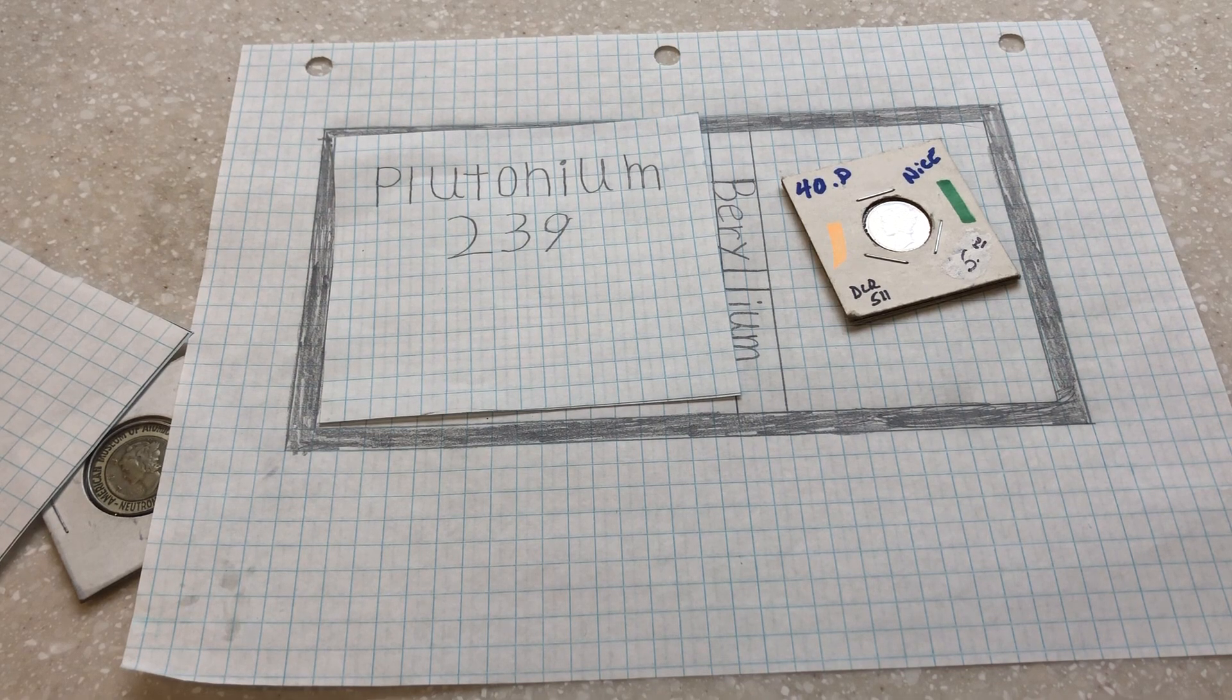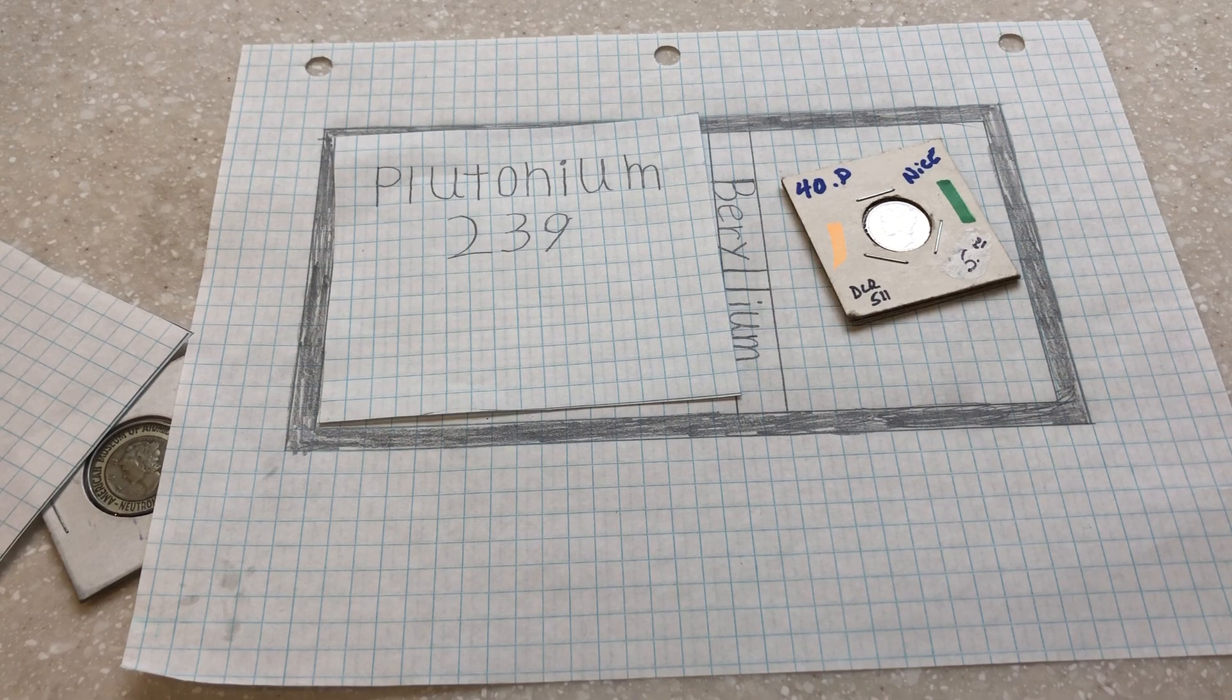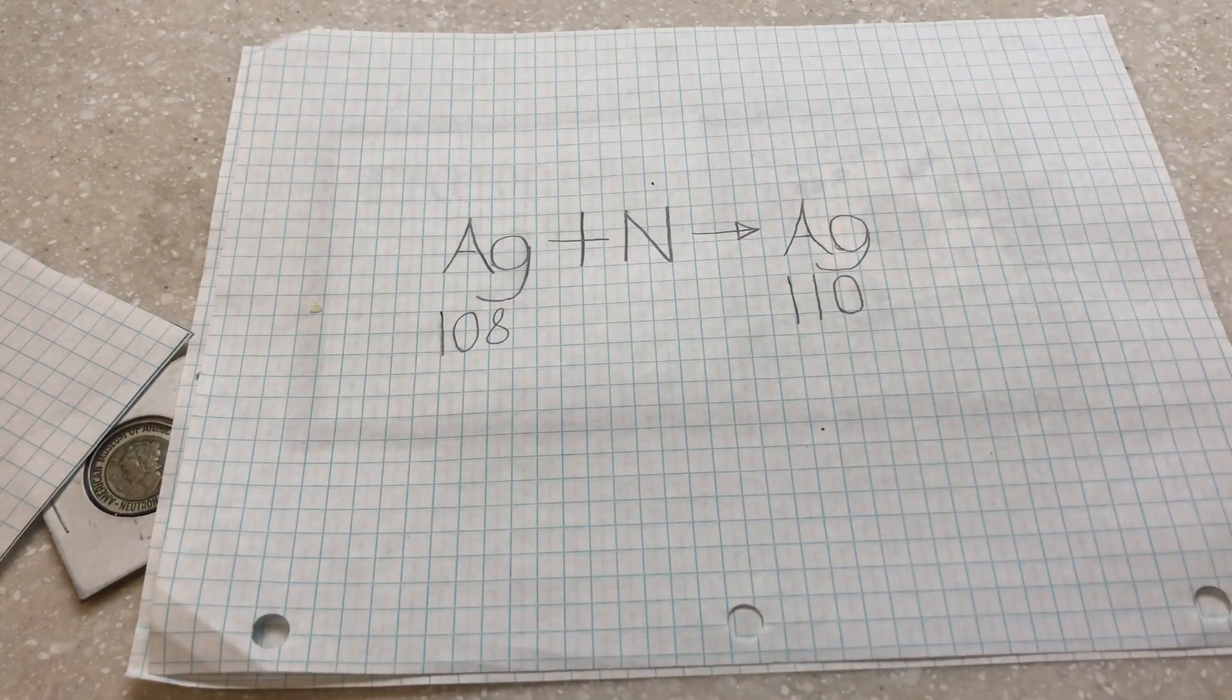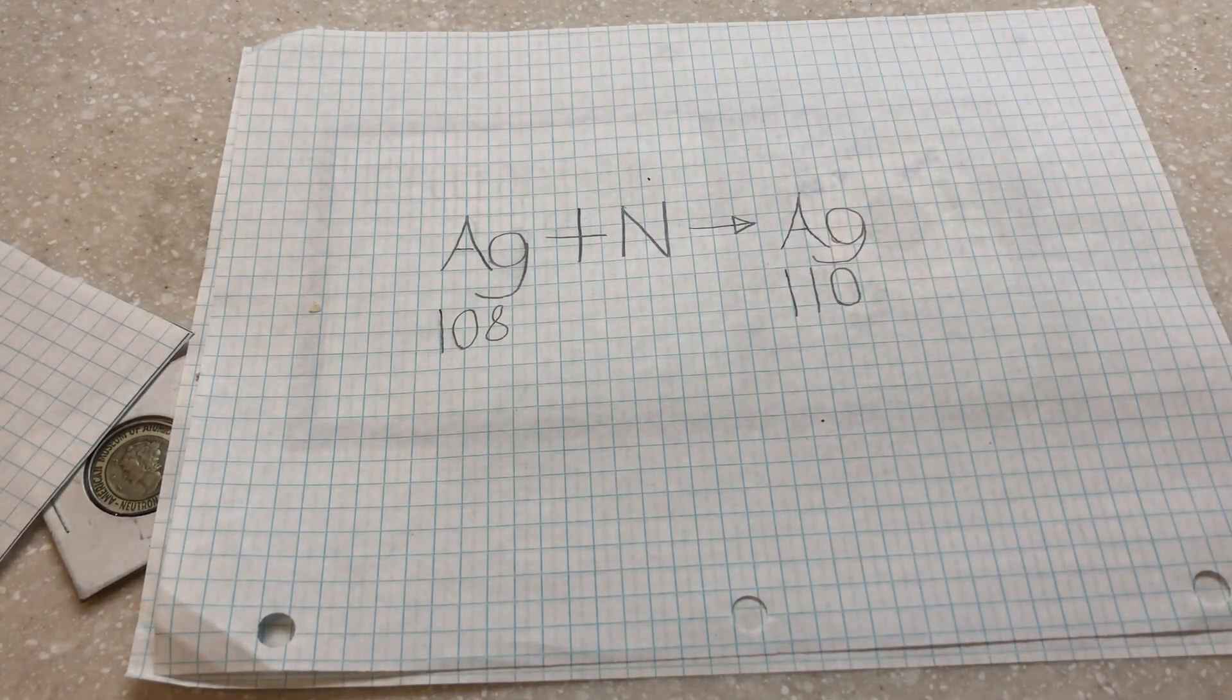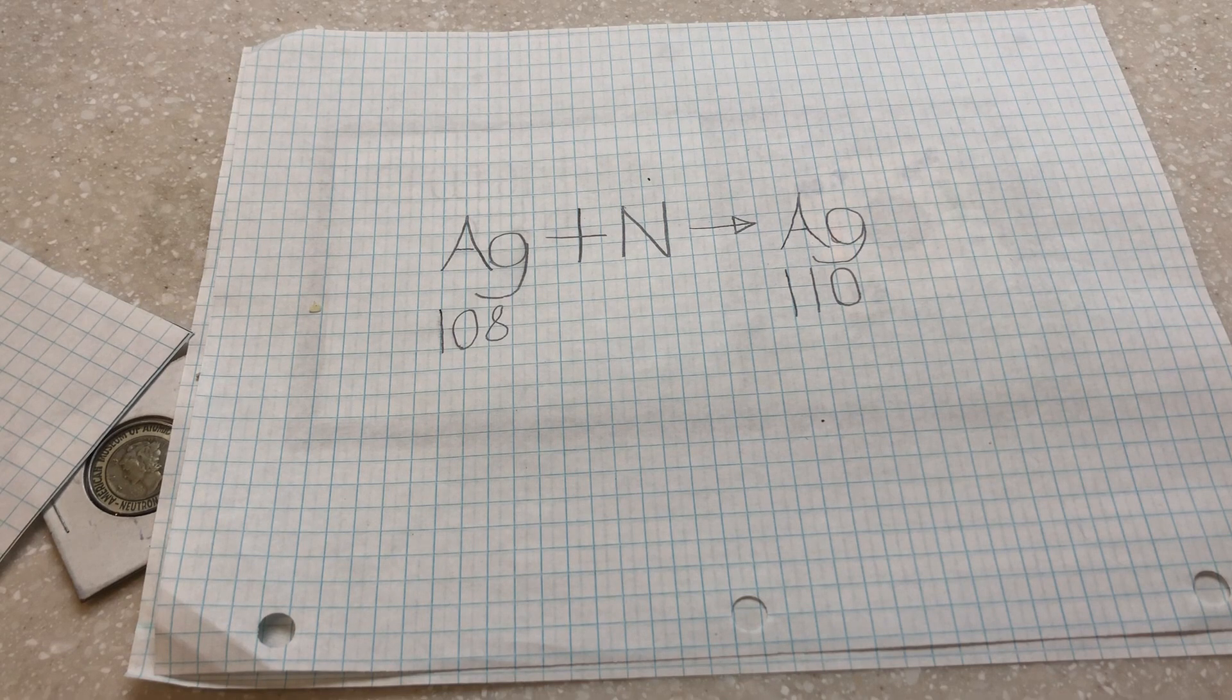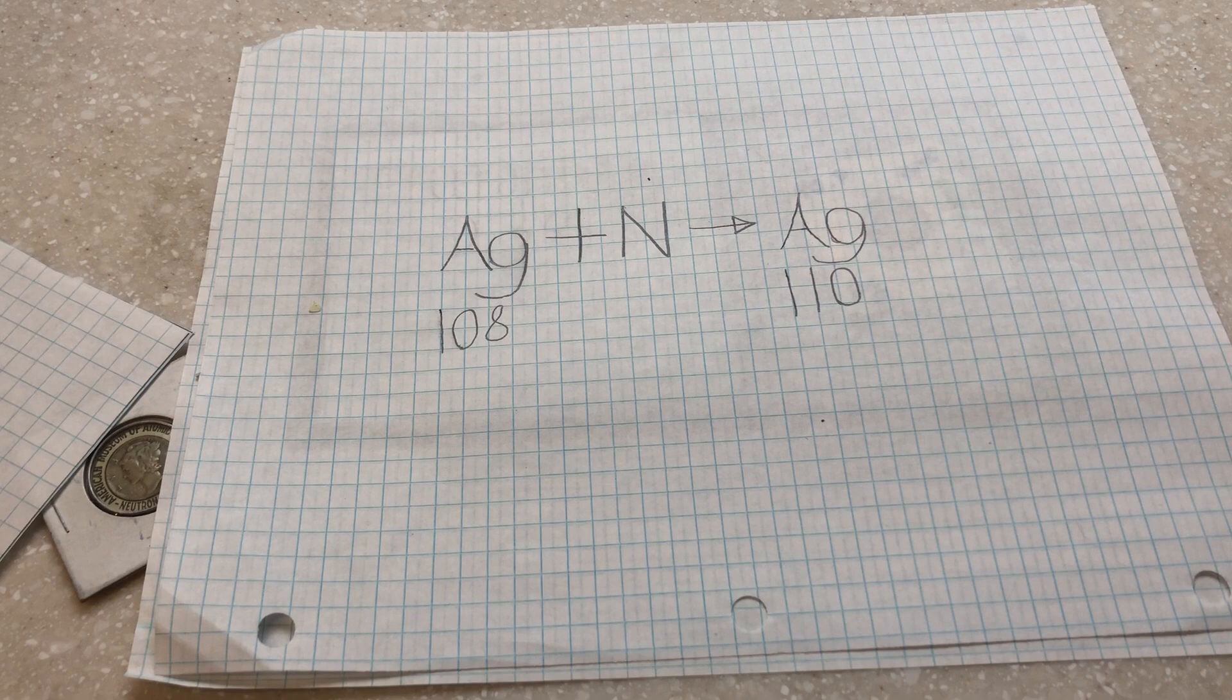A neutron output is needed for this reaction to take place. When the neutron hits the silver-108, it causes it to change to silver-110, irradiating the coin. Silver-110 has a half-life of around 25.6 seconds before it decays away rapidly.